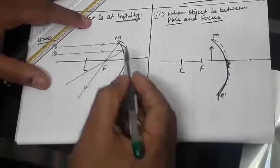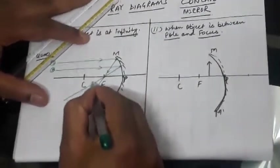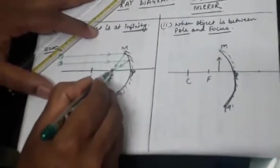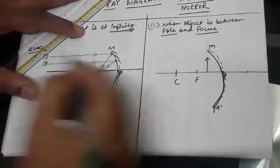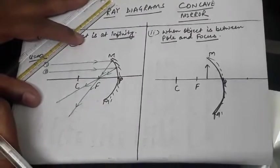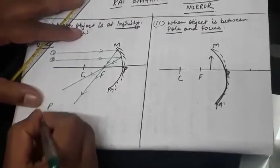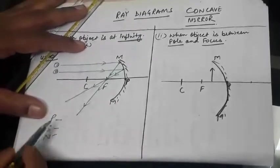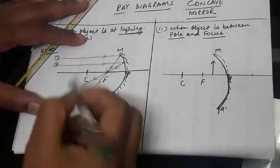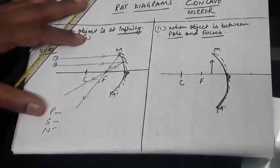This is called incident ray. These two are reflected rays. The point where both the reflected rays meet, that is the point of formation of image. After the completion of image, we have to write three things: P, S, N. Where P is position of the image. Position of the image is at focus.